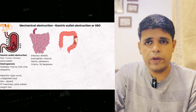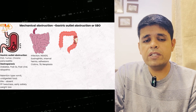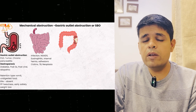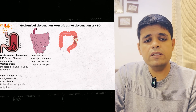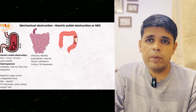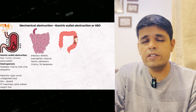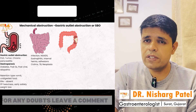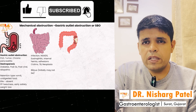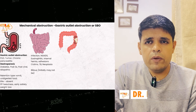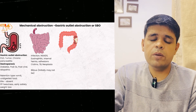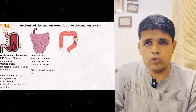Crohn's disease may also have extra-intestinal manifestations like arthritis, oral ulcers, scleritis, and episcleritis. The typical vomiting in small bowel obstruction is bilious (green in color). Initially it may not be bilious, but as the obstruction progresses, vomiting becomes bilious. There is colicky pain lasting around 5 to 10 minutes with gaps of 15, 20, 30, or 45 minutes — pain comes in waves.